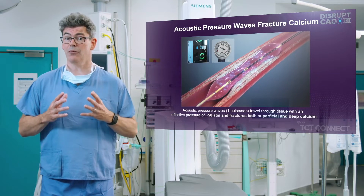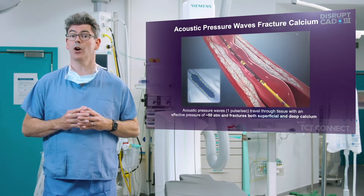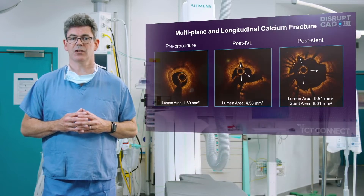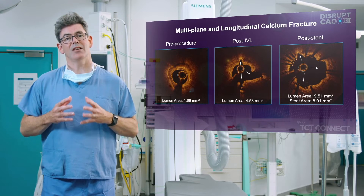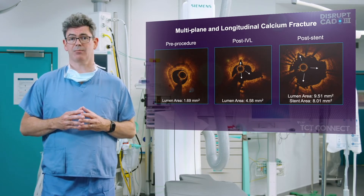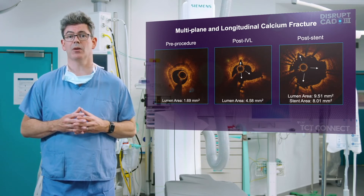The balloon is inflated to four atmospheres, ten impulses are given, and the balloon is then inflated to a nominal pressure of six atmospheres. If full balloon inflation does not occur, the balloon is deflated, reperfusion occurs, and the cycle is repeated. Eventually, full balloon inflation will be achieved at six atmospheres. The mechanism of action appears to be multiplane longitudinal calcium fracture. As seen on the far right, there is calcium fracture expansion with stent deployment, which appears to be the mechanism for increased transmural compliance.